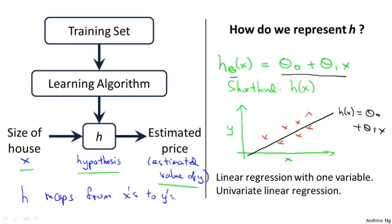Let me also give this particular model a name. This model is called linear regression. Or this, for example, is actually linear regression with one variable, with the variable being x. So predicting housing prices as a function of the one variable x. And another name for this model is univariate linear regression. And univariate is just a fancy way of saying one variable.